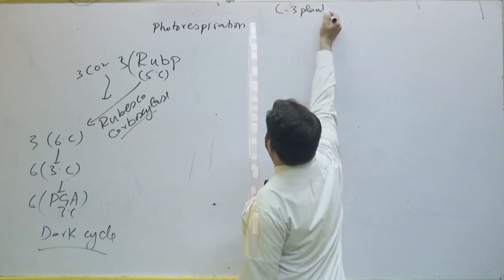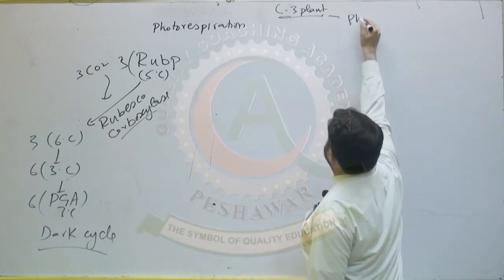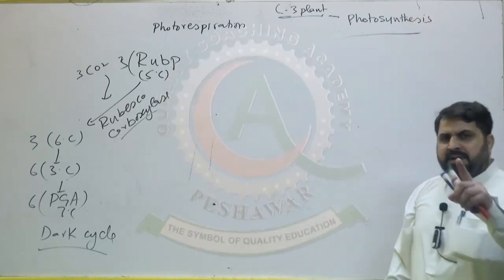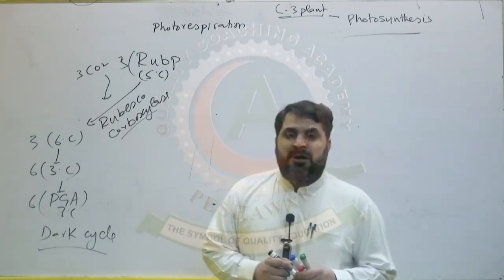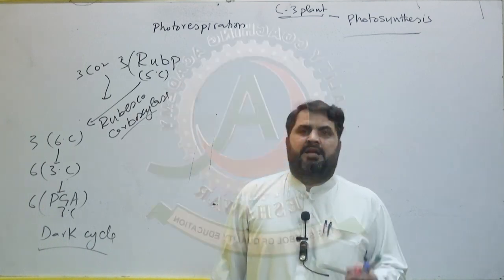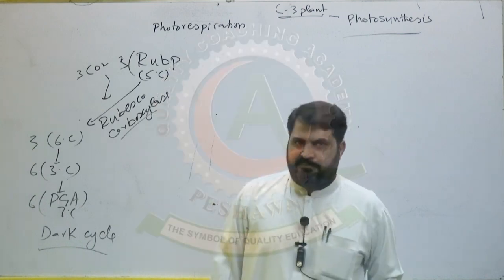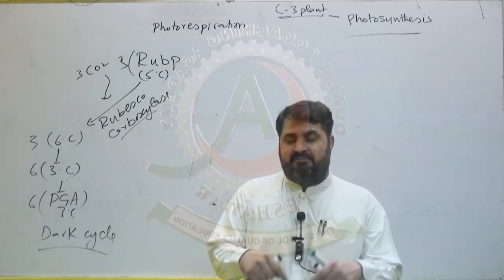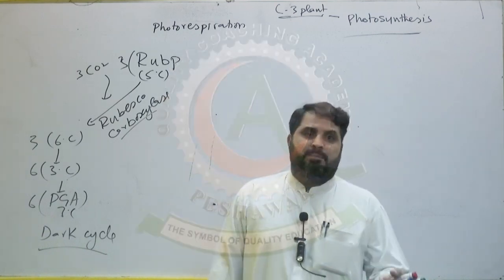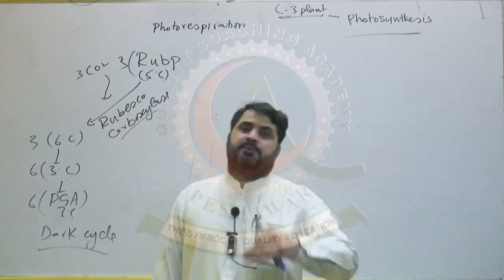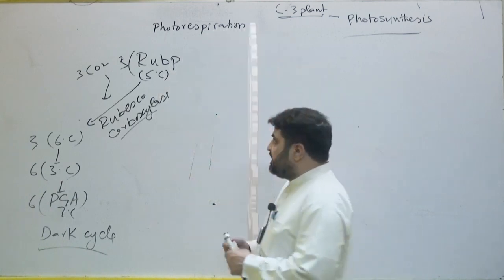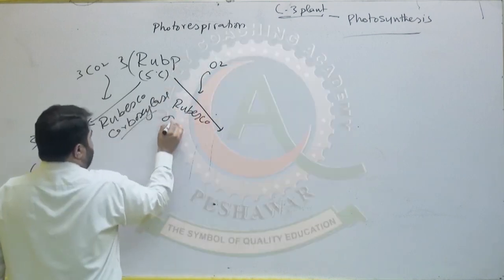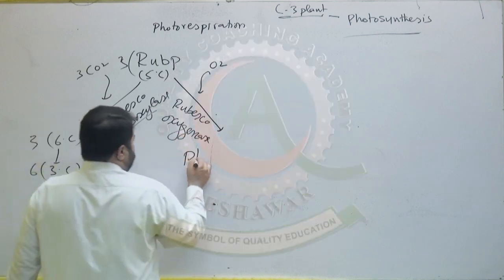In C3 plants, photosynthesis takes place when the concentration of carbon dioxide is greater. But during harsh conditions in summer, plants close their stomata to prevent water loss. When stomata are closed, oxygen produced within the leaf cannot be released outside, and carbon dioxide required for photosynthesis cannot enter. So when oxygen concentration becomes greater, the same RuBisCO enzyme now acts as an oxygenase and begins photorespiration.